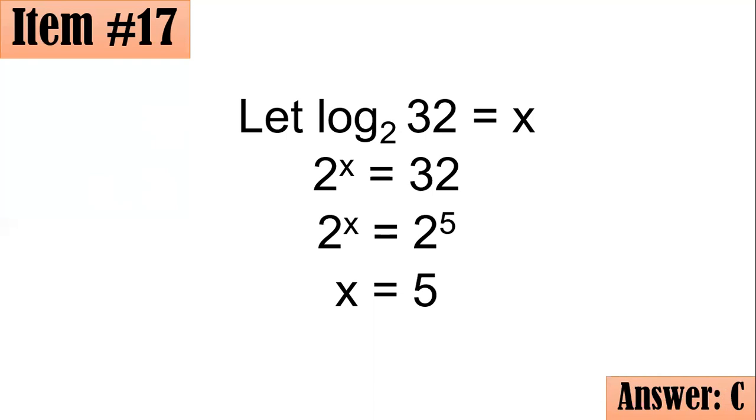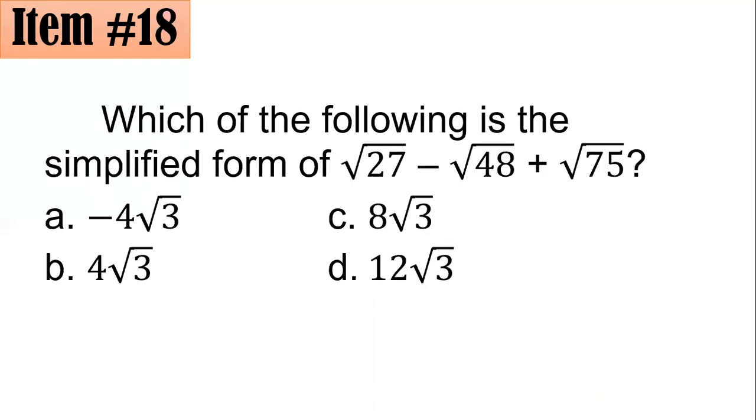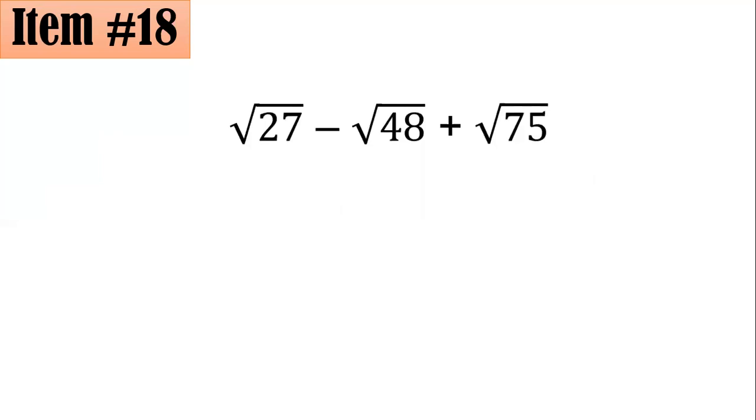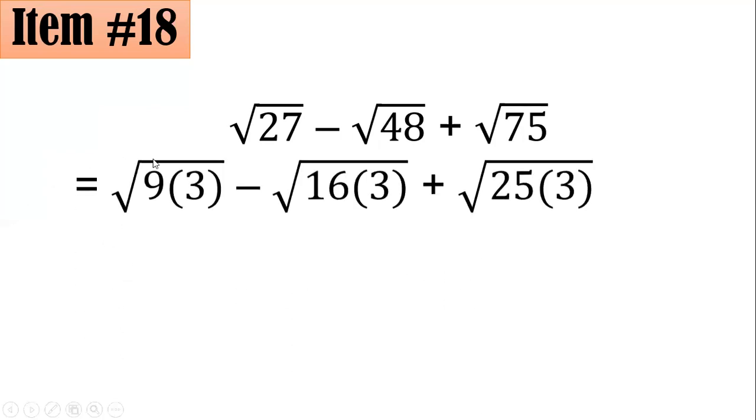Number 18. Which of the following is the simplified form of square root of 27 minus square root of 48 plus square root of 75? Is it negative 4 square root of 3, 4 square root of 3, 8 square root of 3, or 12 square root of 3? From here, we could see that 27, 48, and 75 are not perfect squares. However, they have perfect square factors. For 27, it's 9 times, the largest perfect square is 9. So, 27 is expressed as 9 times 3. 48, that's 16. So, we have 16 times 3. For 75, its largest perfect square factor is 25. So, I expressed 75 as 25 times 3.